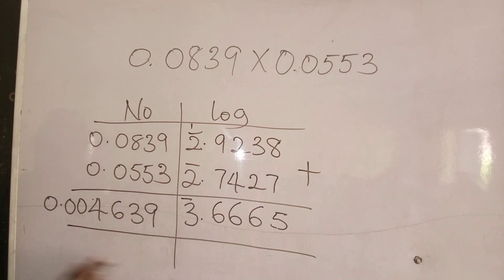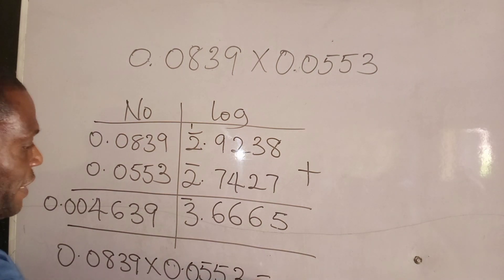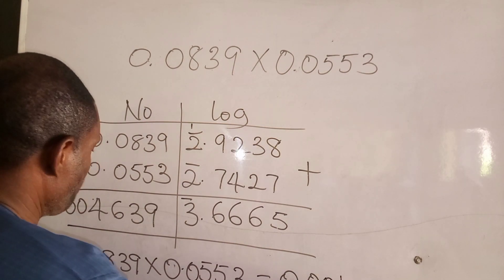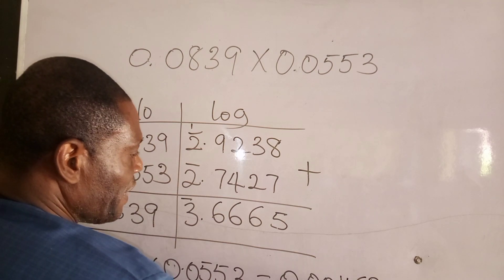This is the value for 0.0839 times 0.0553. This equals 0.004639.